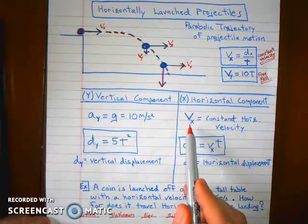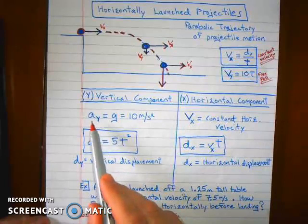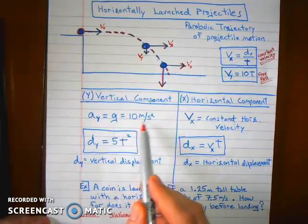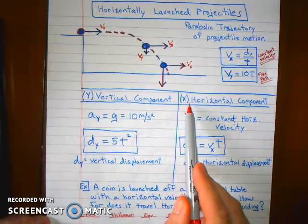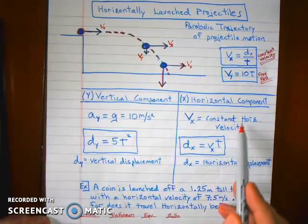We know that in the y direction, there's an acceleration, little g at 10 meters per second squared. But in the x direction, there is no acceleration because it has constant horizontal velocity.